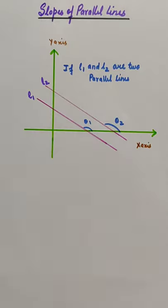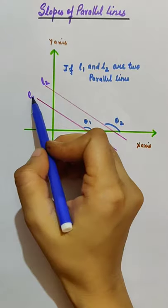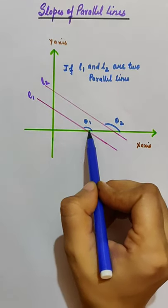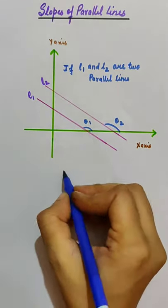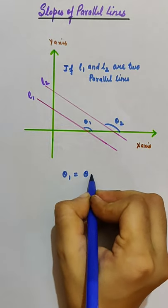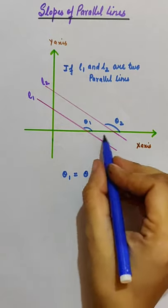How are the slopes of two parallel lines related? Let's take two parallel lines in a coordinate plane. Since l1 and l2 are parallel lines, we can say theta 1 is equal to theta 2, because they are corresponding angles.